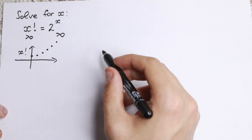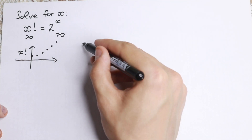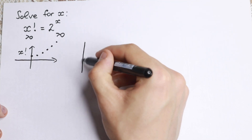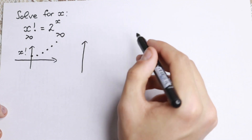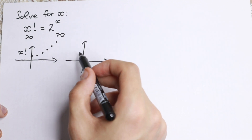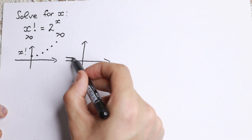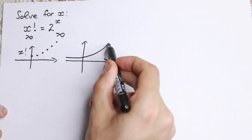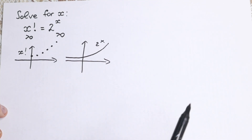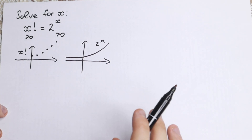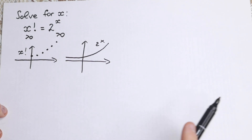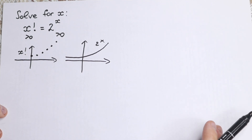On the right-hand side I want to draw the 2 to the x function. We all know this is an exponential function. This function looks like that — this is our 2 to the x. So these are our two graphs: the factorial graph and the exponential graph 2 to the x.